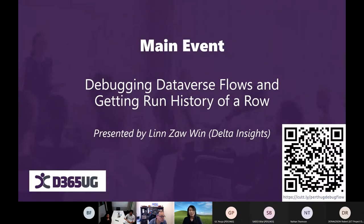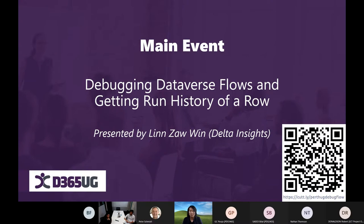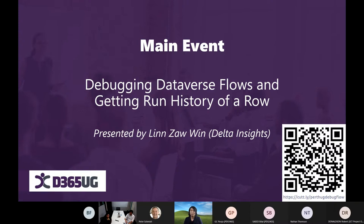Today's session is about debugging flows, especially around the Microsoft Dataverse connector. Dynamics and Power Platform professionals use the Dataverse connector a lot, so I hope this will be useful. The second part is about getting the flow run history of a record. Sometimes during troubleshooting we need to find which particular flow run is associated with a specific record GUID.